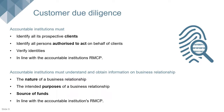In terms of the FIC Act, accountable institutions must identify all prospective clients and all persons authorised to act on behalf of those clients. If it is not the client themselves but somebody acting on their behalf, you also have to identify and verify the identity of those people. Where a client is authorised to act on behalf of somebody else, both that client and the person they are authorised to act on behalf of need to be identified and verified. These requirements are found in Section 21(1)(a) and Section 21(1)(c) of the FIC Act.